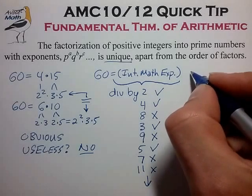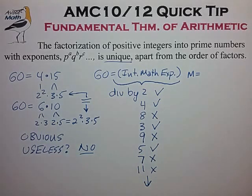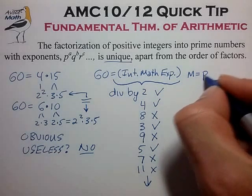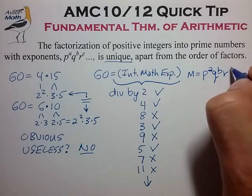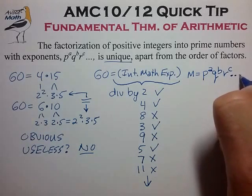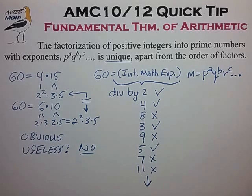Let's take a look at the general number m, which again by the fundamental theorem of arithmetic we know has a prime factorization p to the a, q to the b, r to the c, however many are necessary. And let's take a look at the form of m squared.